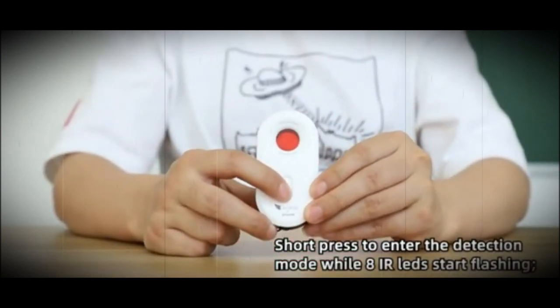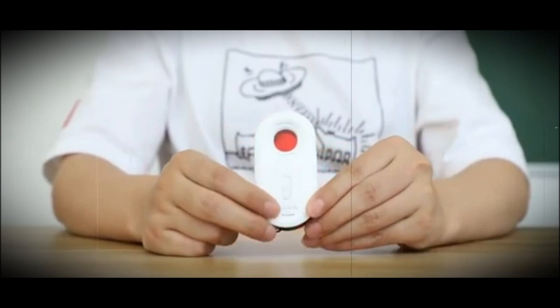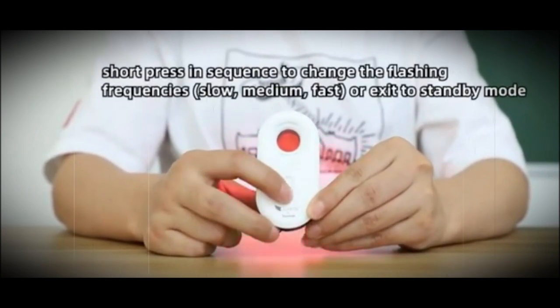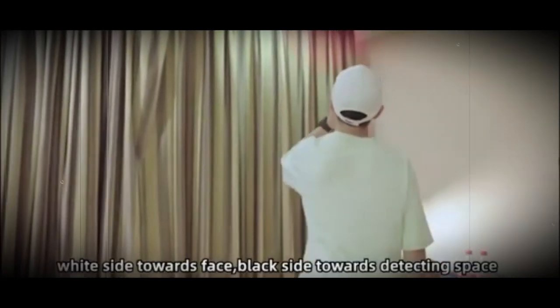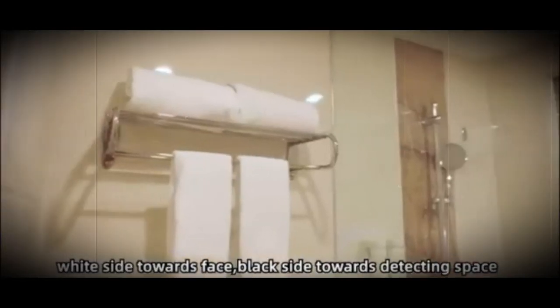Besides hidden camera protection, it also has a built-in 3D omnidirectional vibration sensor. Hang the device on your suitcase and it will alert you by sound or light alarm when someone touches it.